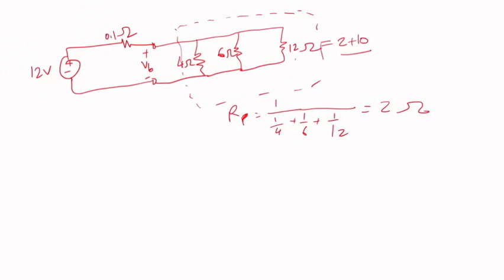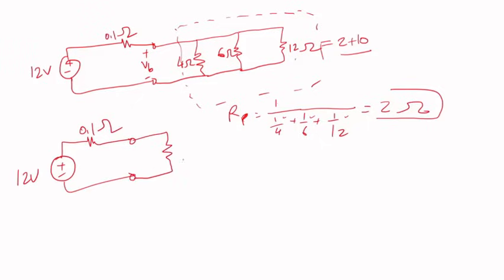Then I can take the equivalent, which is just 1 over (1/4 plus 1/6 plus 1/12). If I solve, I get 2 ohms. So I can redraw the circuit just like this without changing anything. The terminals here, what the source VB sees really, as an equivalent resistor, is just 2 ohms. It's just a combination of series and parallel, but the resultant is just 2 ohms.